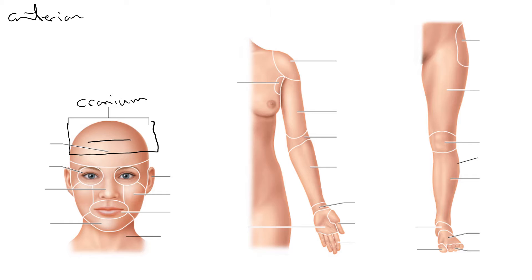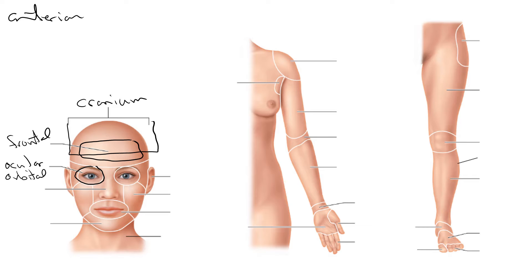The front region here, the forehead, we call that the frontal region. There's a bone underneath called the frontal bone — makes it pretty easy to remember. The eye region is your ocular, or also orbital region. The orbit of the eye rotates around inside there.